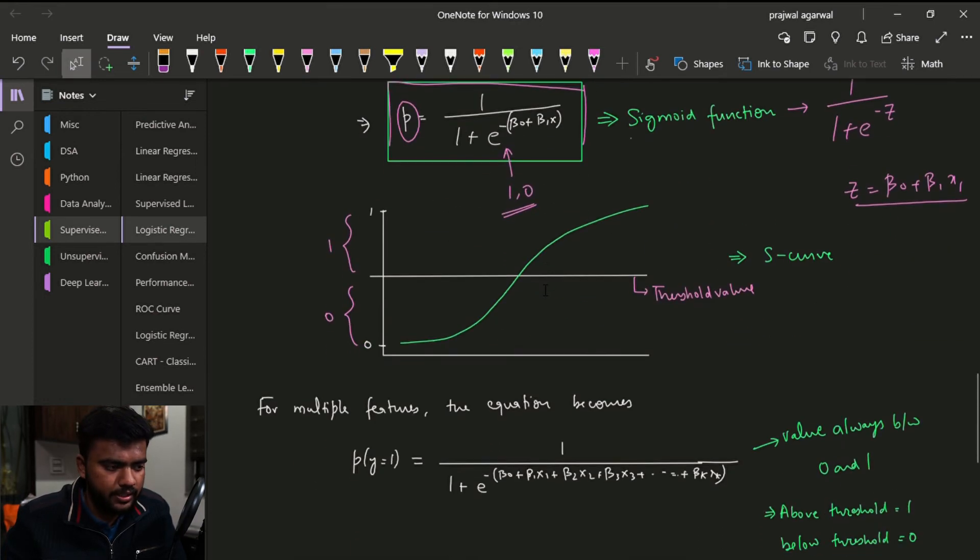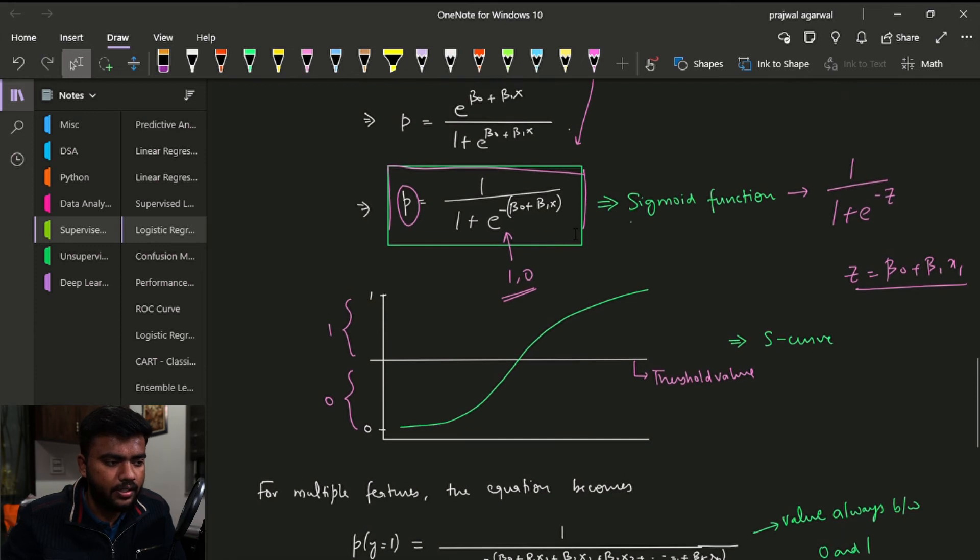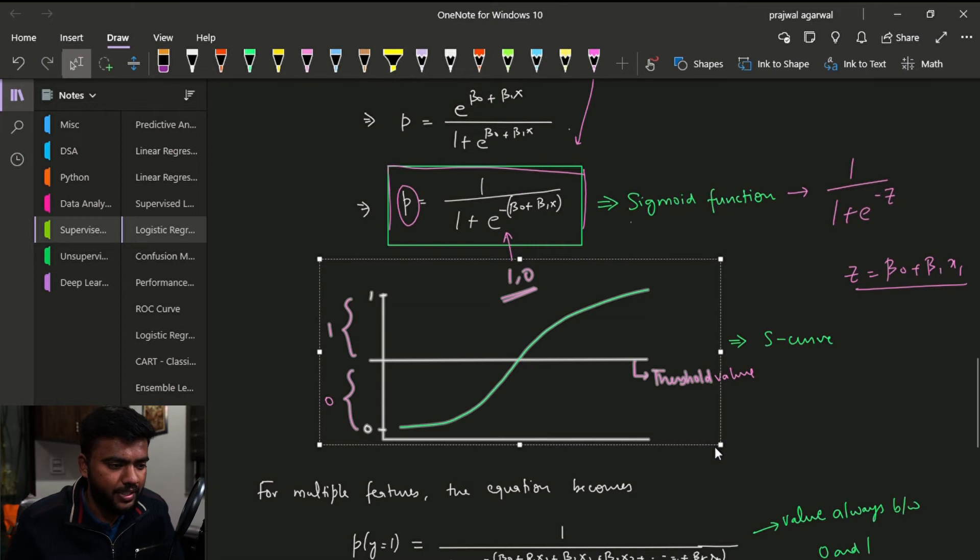Yeah, so this is the equation, and when we plot a graph for the sigmoid function, then we get this very beautiful S curve, which is exactly what we need to solve our coronary disease kind of problems.